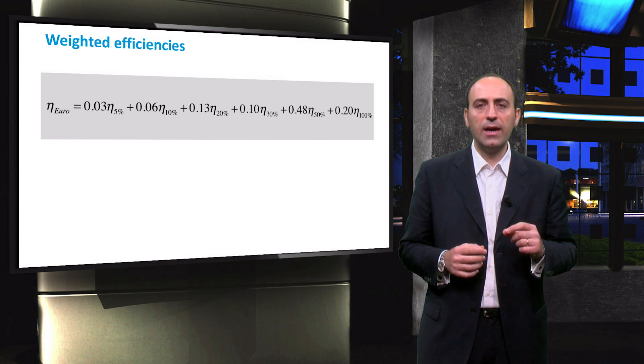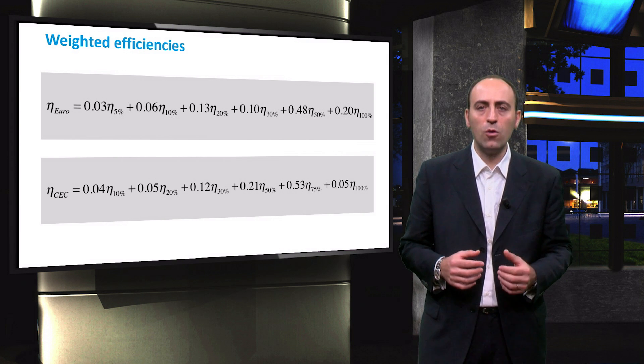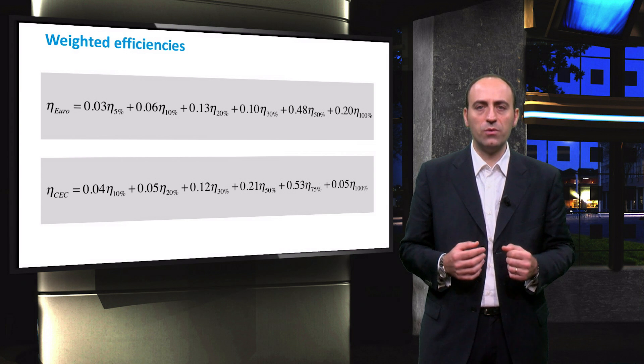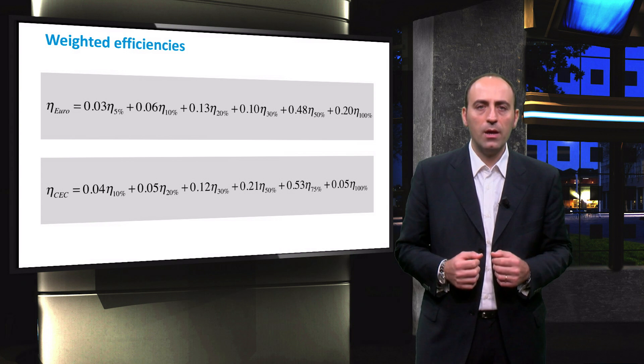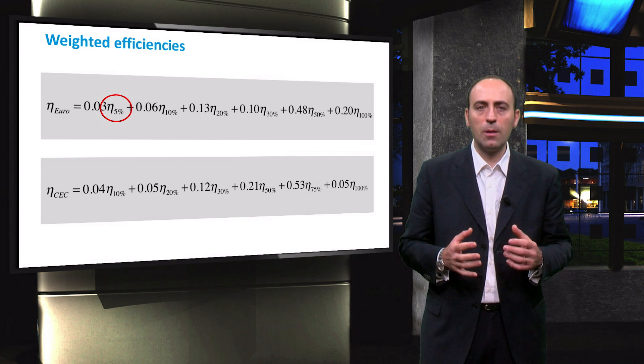the California Energy Commission efficiency, which represents the PV system performance in high-insolation regions, such as in the southwest of the United States. Efficiency values, like the one in the red circle, denote the efficiency at a certain percentage of nominal power of the inverter.